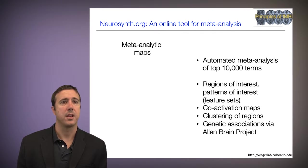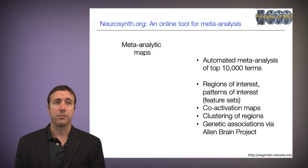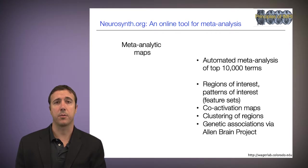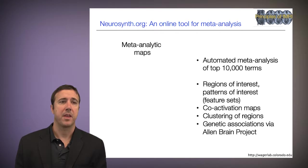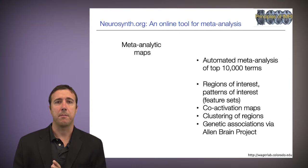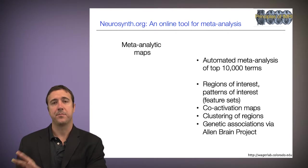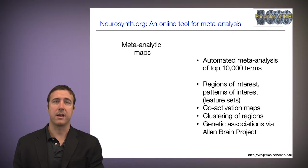Neurosynth is being actively developed and is useful for conducting region of interest analysis or pattern of interest analysis, creating coactivation maps, clustering of regions, and even recently genetic associations by matching the Allen Brain Project genetic maps with meta-analysis maps from Neurosynth. There are lots of things you can do with it, and many uses we won't go over all of them here.